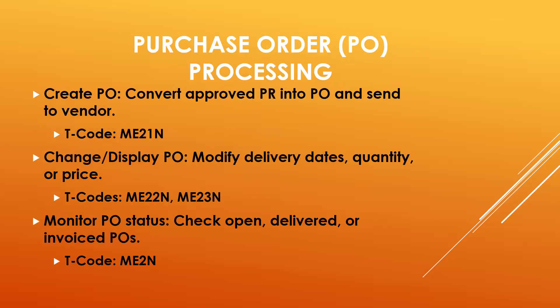Next, Purchase Order. The end user creates a Purchase Order — converting approved PRs into POs and sending them to the vendor. The transaction code is ME21N. They also change the Purchase Order — updating quantities, prices, and everything — using ME22N and ME23. They also manage Open Purchase Orders. A link has been provided in the description for Open Purchase Order Management.